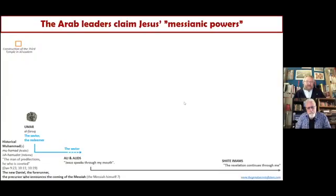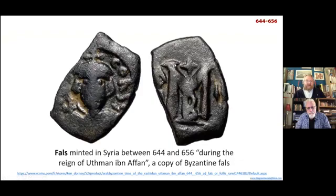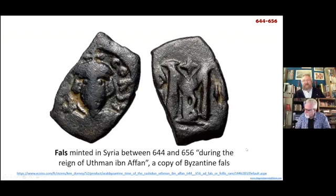Let's get back to hard evidence. Let's get back to the coins, the inscriptions. For example, this coin was minted between 644 and 656. So according to the standard Islamic narrative, this should be a coin minted by Uthman ibn Affan. And it is a crude copy of a Byzantine follis.